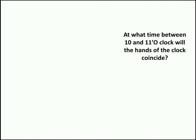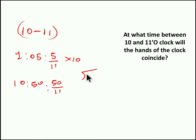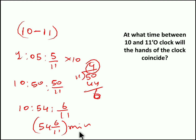Second question: at what time between 10 and 11 o'clock will the hands of the clock coincide? This is similar to the previous model — you multiply by 10. Ten times 5 is 50, giving 50/11, and 1 times 10 is 10. In 50/11 we have a complete 4 minutes, which is carried to 50 minutes. So at 10 o'clock 54 minutes and 6/11 seconds — that is, 54 6/11 minutes after 10 o'clock — both needles will coincide between 10 and 11.